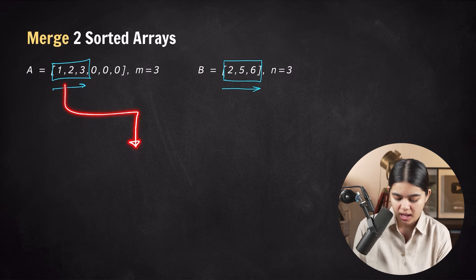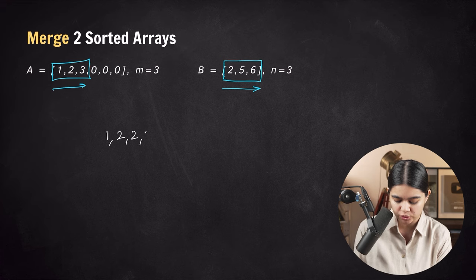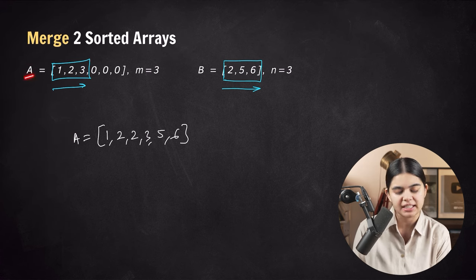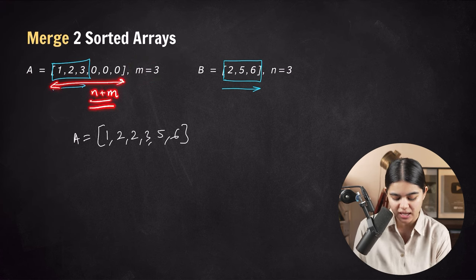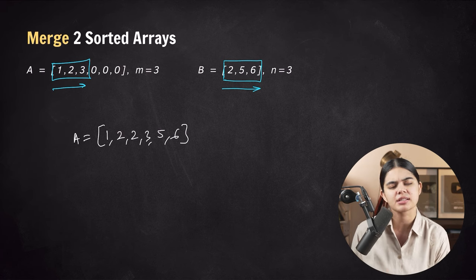We have to merge these two arrays in overall sorted order and store the result in the first array. The final order should be 1, 2, 2, 3, 5, and 6. Our original vector A has m valid elements but its size is m plus n, with the remaining positions filled with zeros. So how will we solve this question?